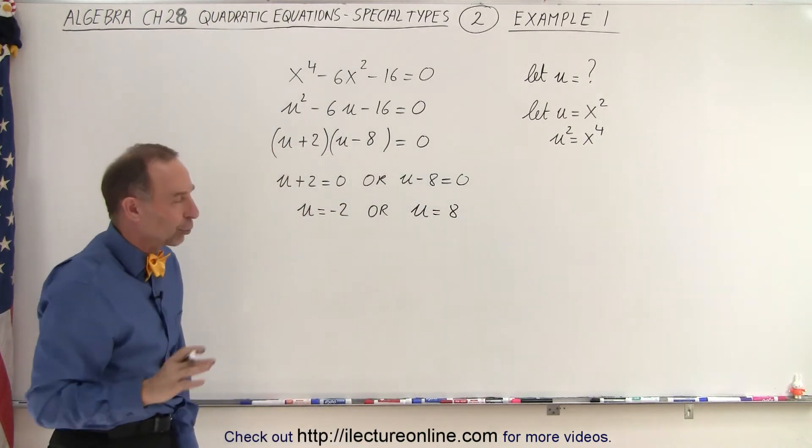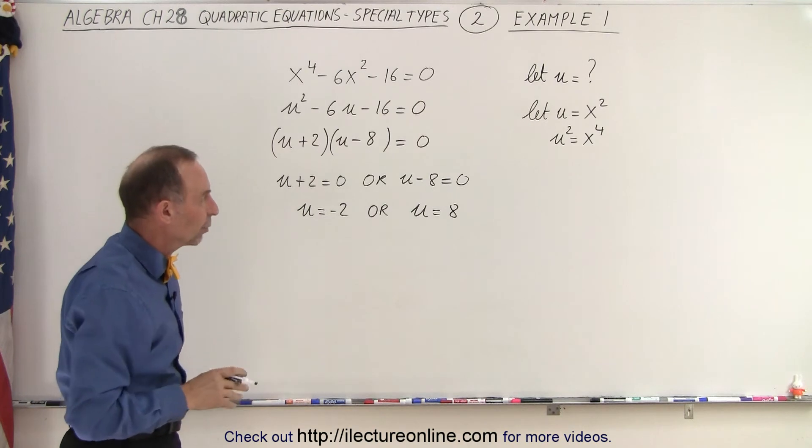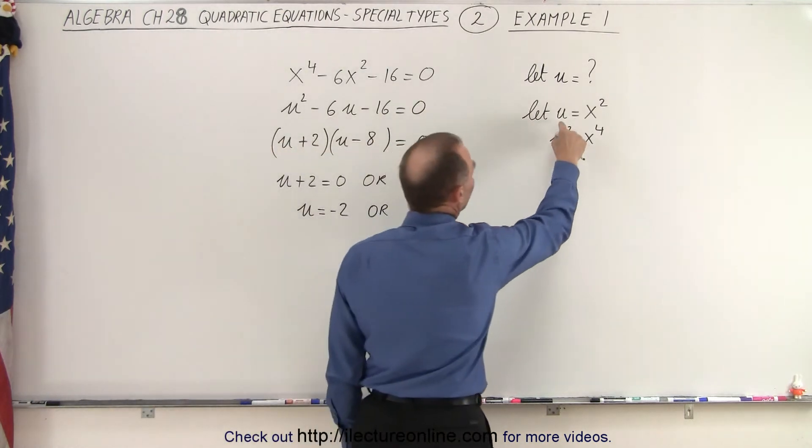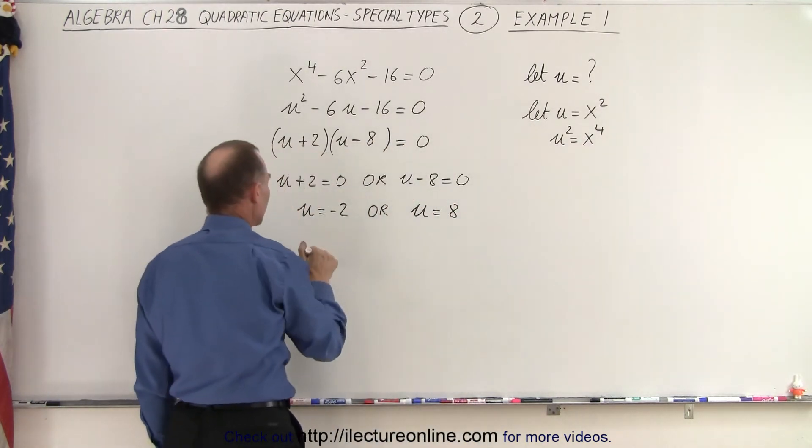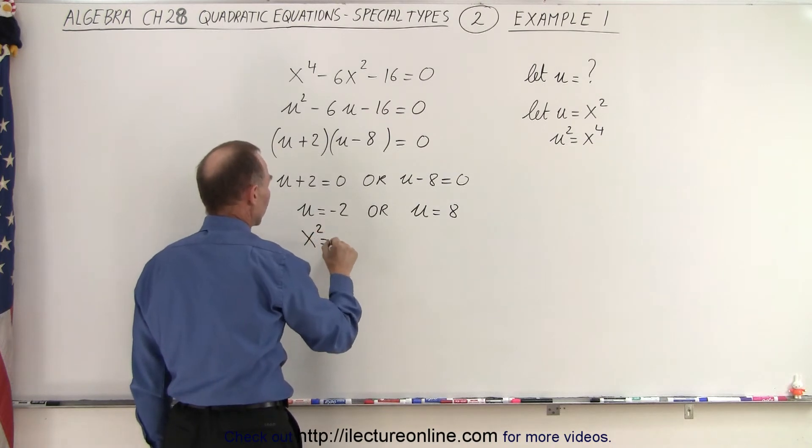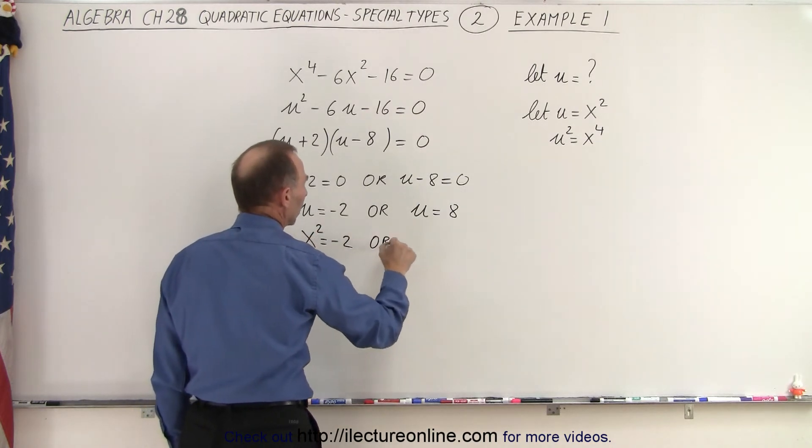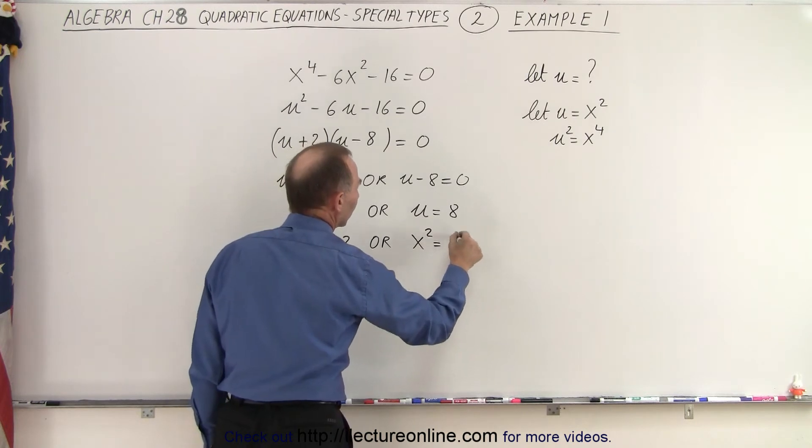Now, of course, we weren't looking for u. We were looking for x, which means we now have to substitute back u equals x squared. So that means that x squared equals negative 2 or x squared equals a positive 8.